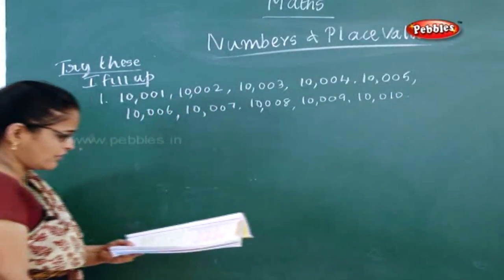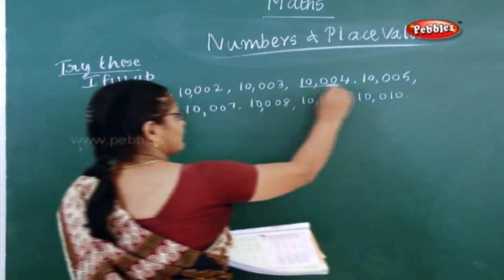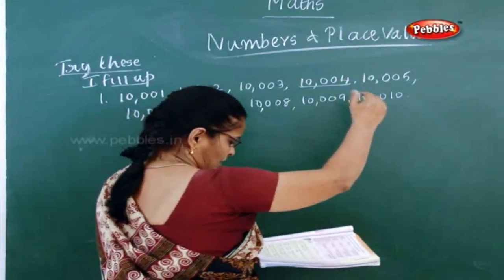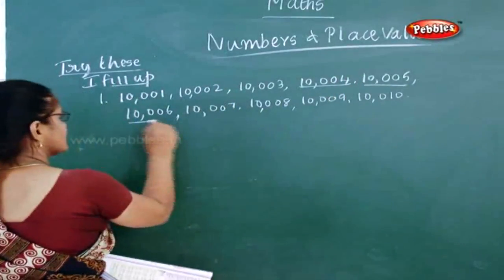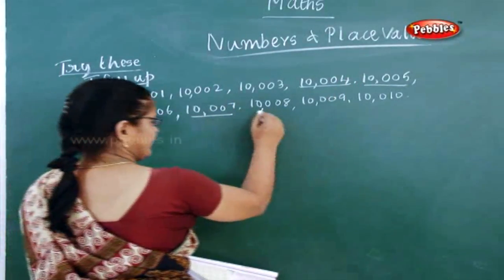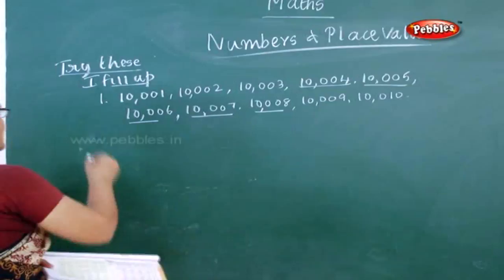So this is what they have given. Fill in the blanks from four — they have given the blank: four, five, six, seven and eight.